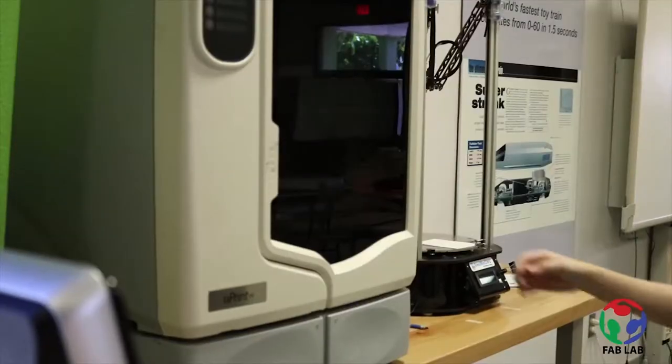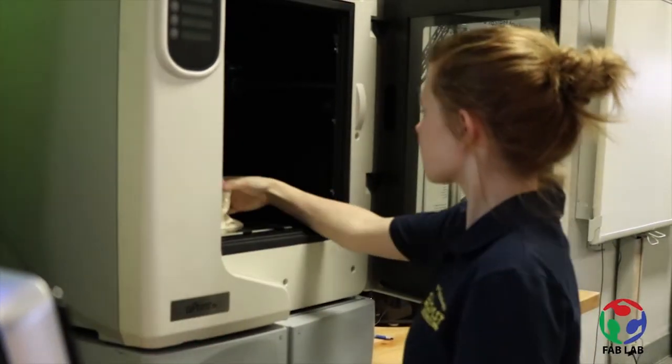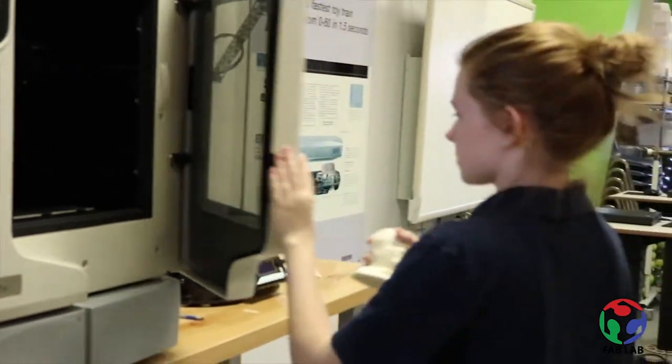So the Fab Lab is a 501c3 nonprofit. It has two branches, so we're called the Suncoast Science Center and Fallhaber Fab Lab. The Suncoast Science Center mostly focuses on outreach programs that go into schools and a lending library and summer camp. And then our Fab Lab is more of a membership program for access to a machine shop.